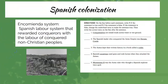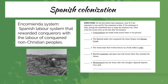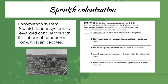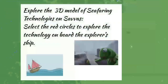When we're looking at Spanish colonization, we're going to be looking at the encomienda system — the labor system that rewarded conquerors with the labor of conquered non-Christian people. We're going to conduct a true-and-false activity for this after we read through the SEVAS lesson. We'll also be exploring the 3D model on SEVAS for seafaring technologies, looking at a ship and what was included on it. The red circles will show us the pieces of technology and their purpose.